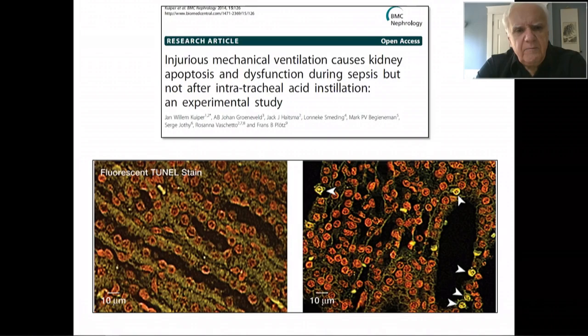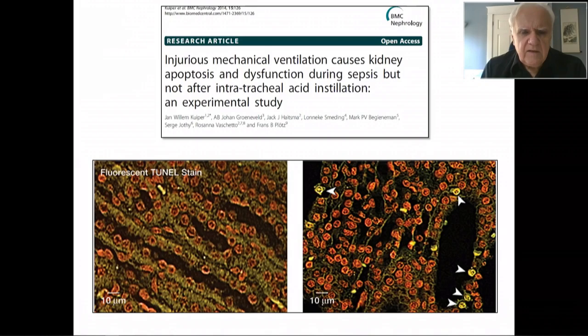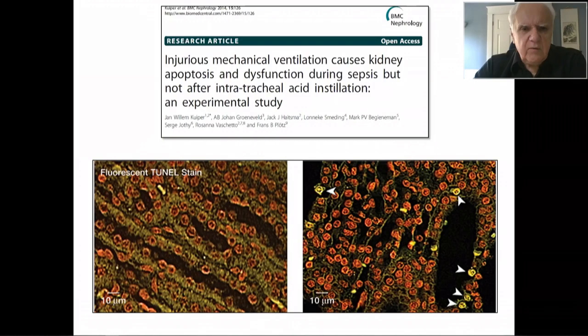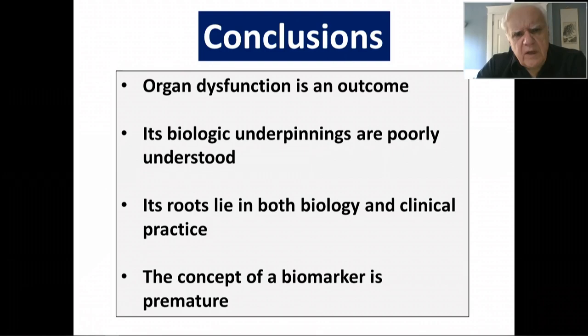This was an animal study looking at the potential role of injurious mechanical ventilation in producing kidney injury. The slides at the bottom are from a separate study, but they show apoptotic cells in the kidney, which are a consequence of injurious ventilation of the lung. The study above shows that this process seems to develop during sepsis, but not as a direct consequence of intratracheal installation of acid. In a sense, this might be a marker of a process that could potentially be modified, but obviously the distance from experimental evidence of a marker showing a modifiable process to applying this in a critically ill patient is an enormous one.